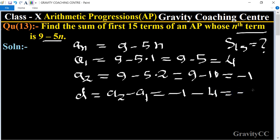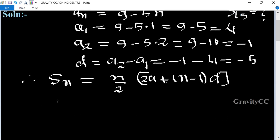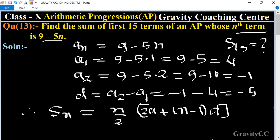So we know that the formula for sum is S_n equals n upon 2 times [2a plus (n minus 1) d]. Now we put the values of n, a, and d.